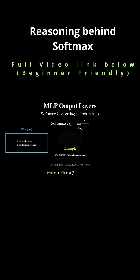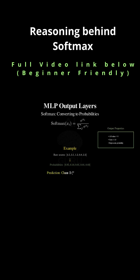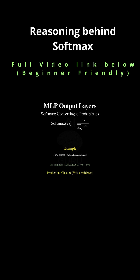Why that formula? Why the exponentiation? It does two crucial things. First, it makes sure all the outputs are positive. But second, by taking that ratio, it forces the entire output vector to be a vector of probabilities that sum to exactly one.